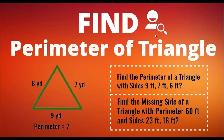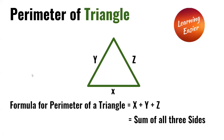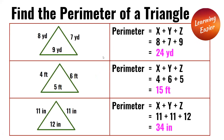Welcome to Learning Easier. Today we're going to learn how to find the perimeter of a triangle. The formula for the perimeter of a triangle is x plus y plus z, or the sum of all three sides.